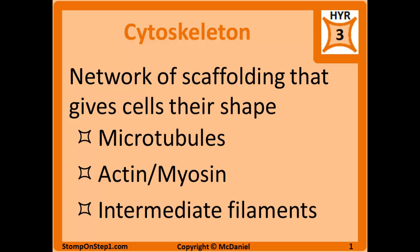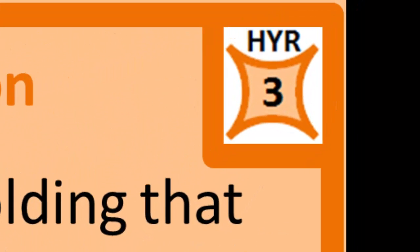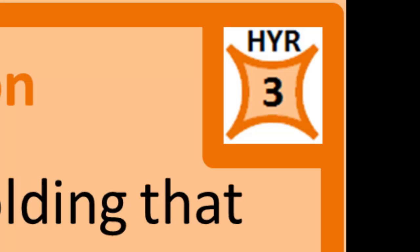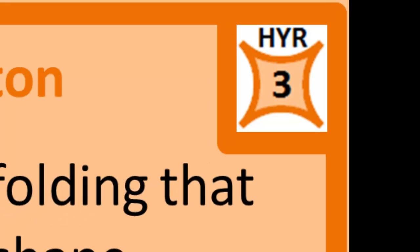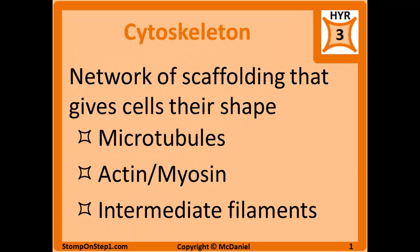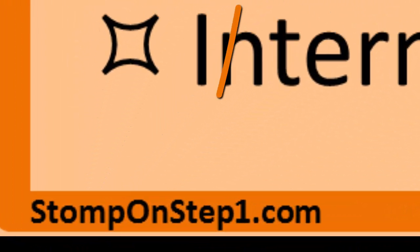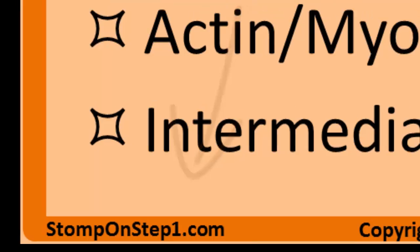You can see here in the top right corner that I give this basic info about cytoskeletons a high yield rating of 3. For those of you that don't know what that is, it is a scale from 0 to 10, giving you a rough estimate for how important individual topics are for Step 1. If you'd like to learn more about that rating system, you can go to my website and check that out.